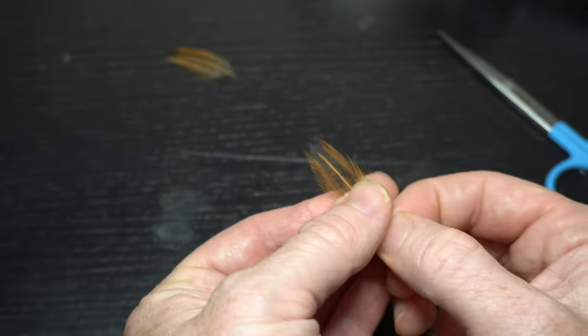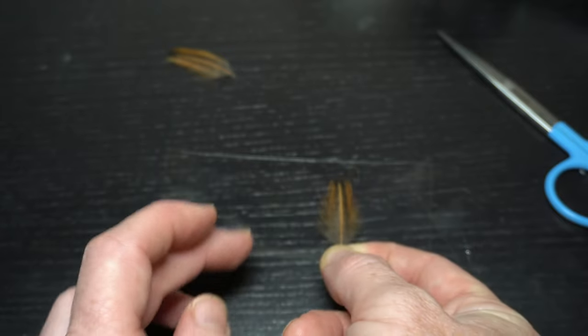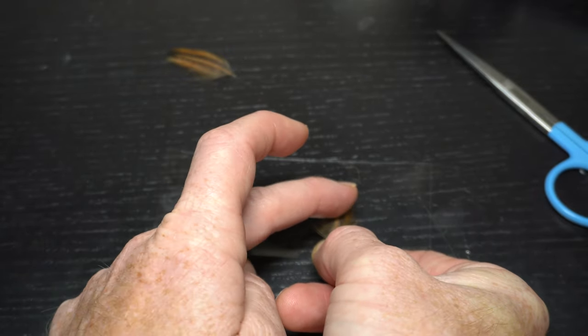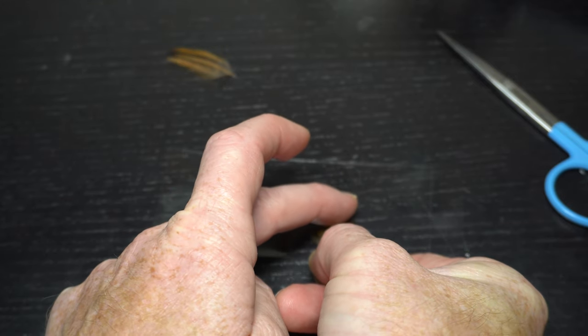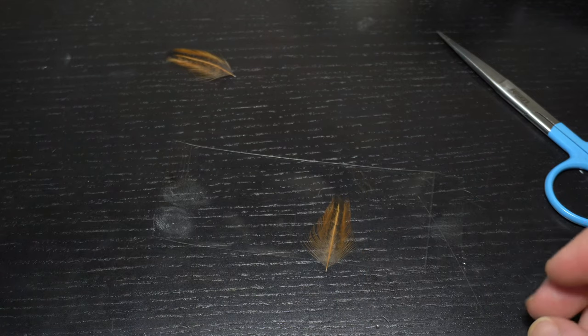Then you just stroke up the fibers, making sure that this is all looking pretty good and even. And then we are going to place this on. Now make sure that when you do, you have it drop straight down. You don't want that to bend because it'll stay that way.